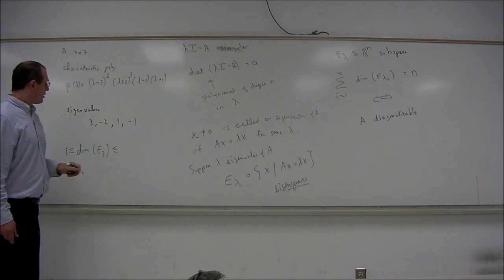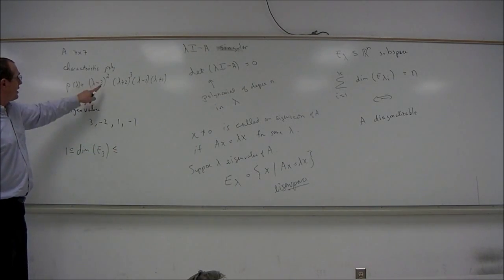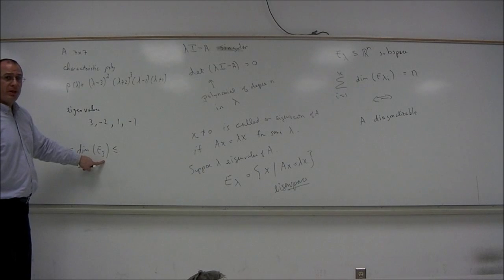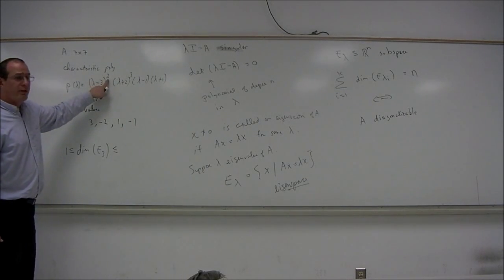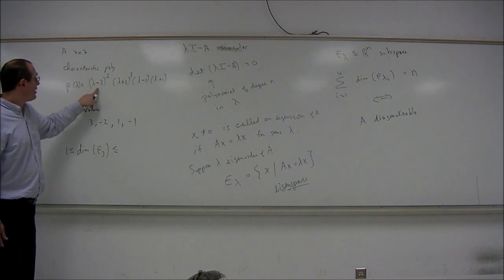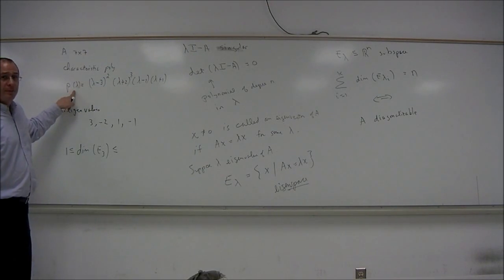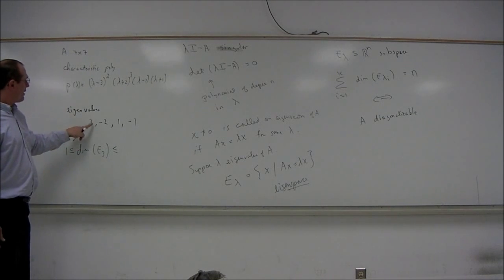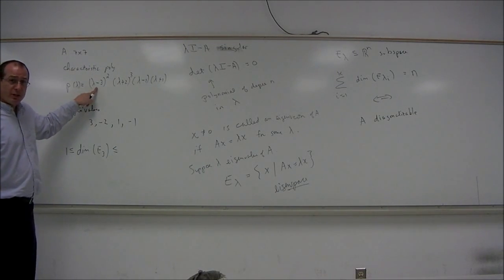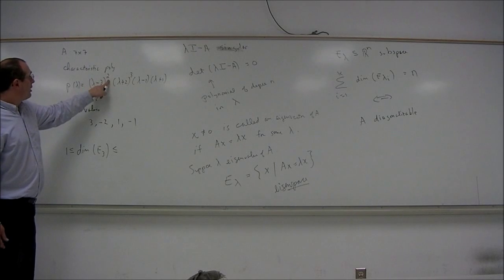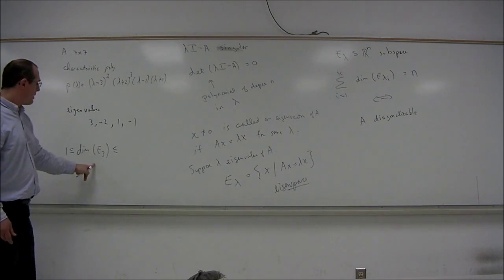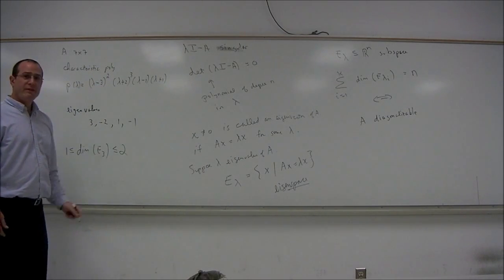And then, the rule is that the dimension of the eigenspace is always less than or equal to the multiplicity of the eigenvalue as a root of the characteristic polynomial. So, the eigenvalue 3 is a root of the characteristic polynomial of multiplicity 2, so the dimension of the eigenspace will never exceed 2.